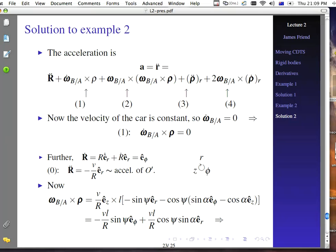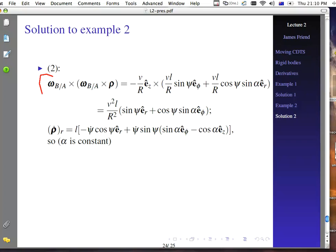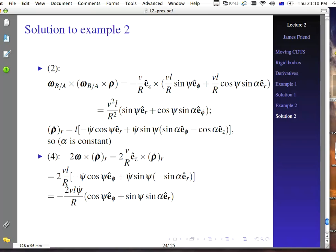So R double dot. And so then, omega B with respect to A across rho. We already have the rho term here. And we're able to write out omega B across A. We're able to write that one out as well. And we can find what our acceleration there is for this part. And all we need to do is use the cross product with omega B with respect to A along that. The rho dot relative to the moving coordinate system is given by this.